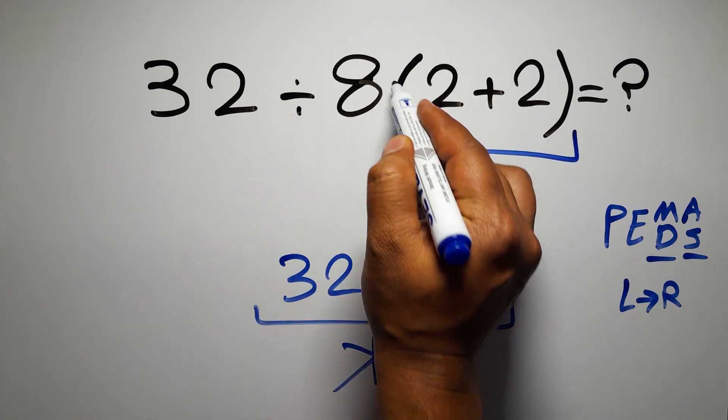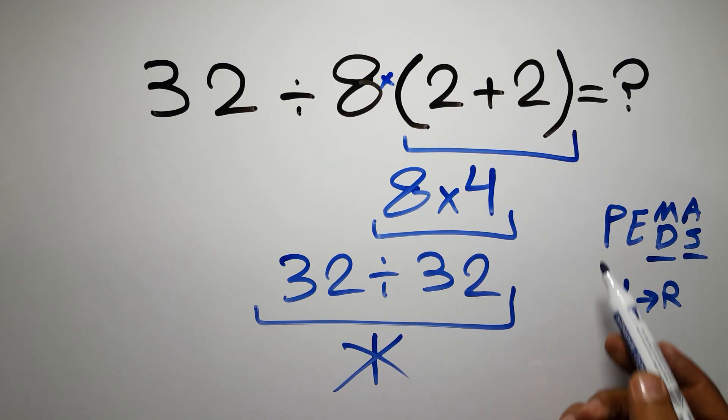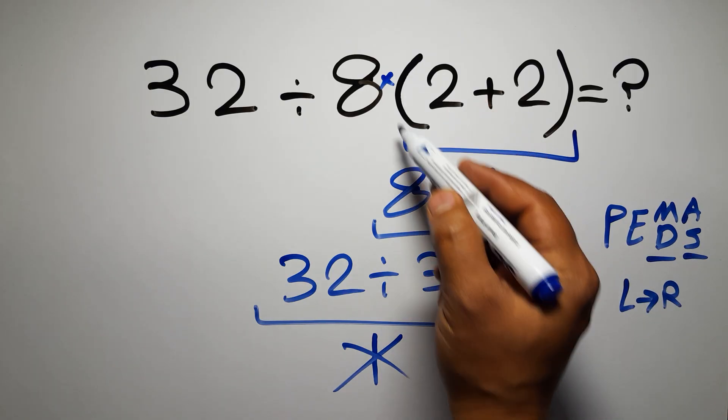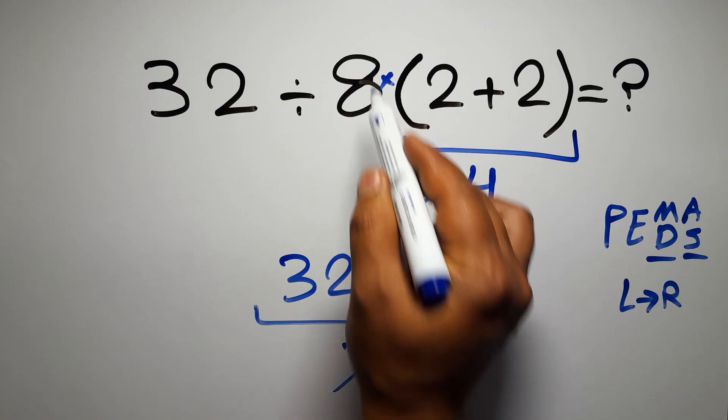Here we have one division, one multiplication, and one parentheses. Inside this parentheses we have one addition. According to PEMDAS, first we have to do this parentheses, then this division, and finally this multiplication.